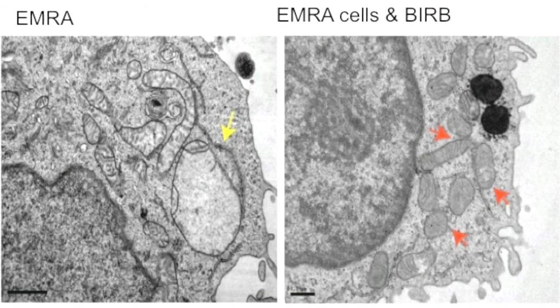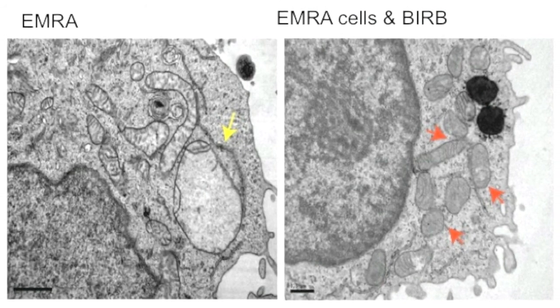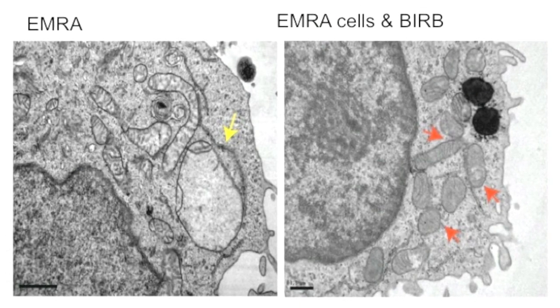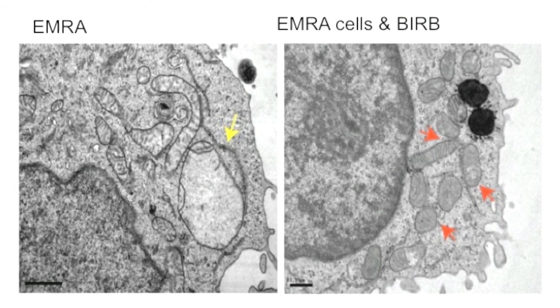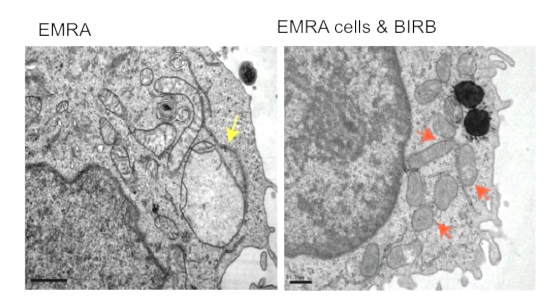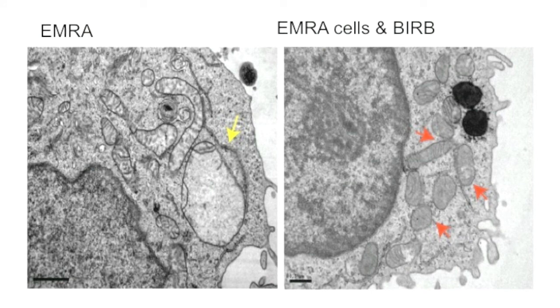We used the small molecule inhibitor BIRB 796 to assess the change in metabolism. When we use BIRB 796 we find that in these senescent cells we can remove the dysfunctional large giant mitochondria and have increased renewed mitochondrial biogenesis, and these new mitochondria are more functional. We then investigated whether this renewed mitochondrial content would shift the metabolism back to a more oxidative metabolism — however, to our surprise we found it didn't. These senescent cells still use anaerobic glycolysis, and this increase in anaerobic glycolysis wasn't associated with an increase in glucose.